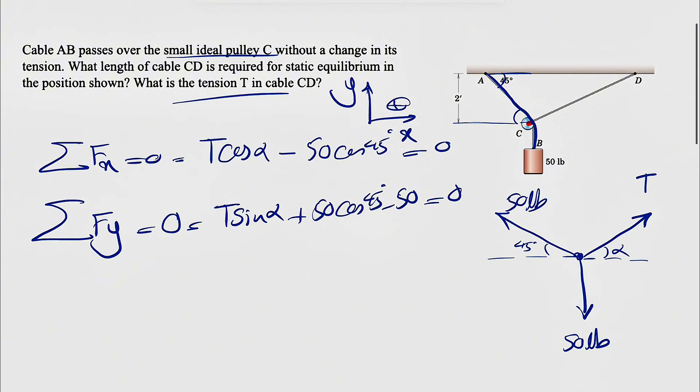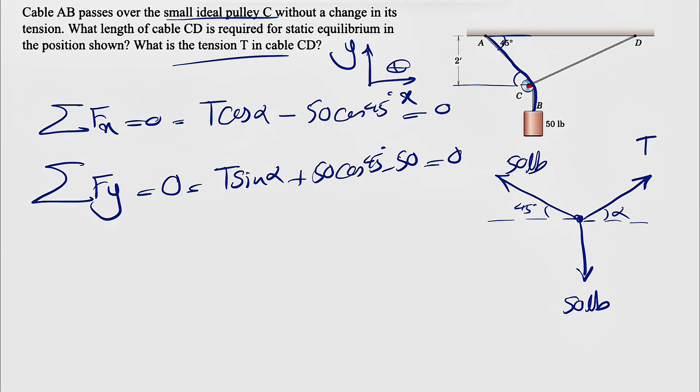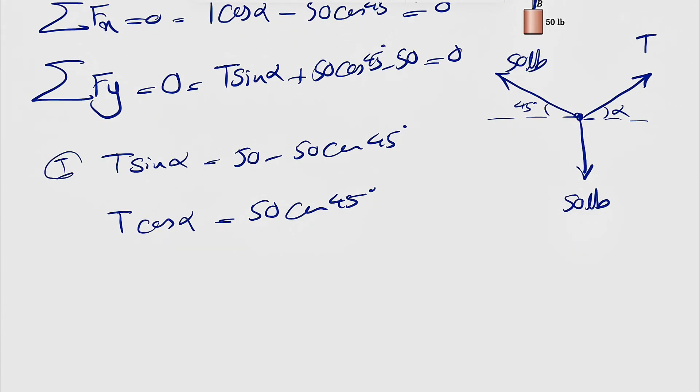And now we're left with two equations with two unknowns. So if we just bring from the second equation, bring T sine of alpha on one side, we're going to have 50 minus 50 cosine of 45 degrees. And from the first equation, we're going to have T cosine of alpha is equal to 50 cosine of 45 degrees. And let's call this one, call this one two.